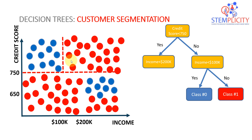If income is more than 100,000 then you are classified as class one. Bear in mind these are rough examples — there can be more than one class and more advanced decisions behind the scenes. This is just a simple example demonstrating how you can dig further and divide customers based on more than one feature: credit score and income.